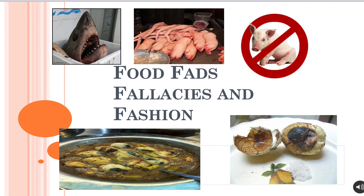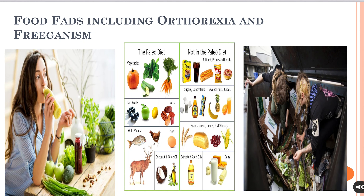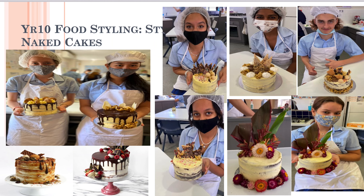In a unit called 'Foods, Fads, Fallacies and Fashion', we explore how culture, religion, and belief systems shape our perception of what is acceptable as food. It's also a unit where we examine the impact of nutrients more deeply, leading us into exploring visceral fat. We look at fad diets, orthorexia, and freeganism, and then finish with a food styling unit — a nice way to end the year.